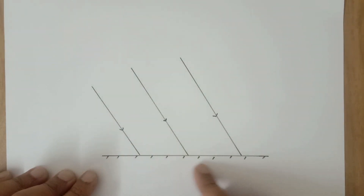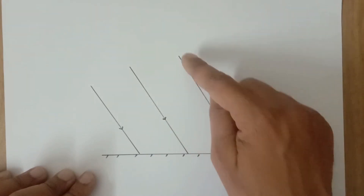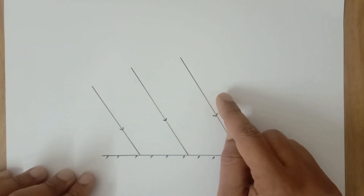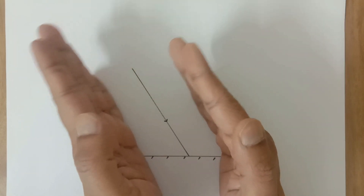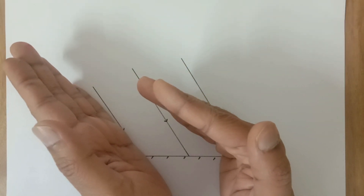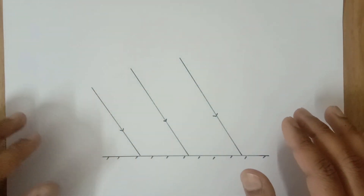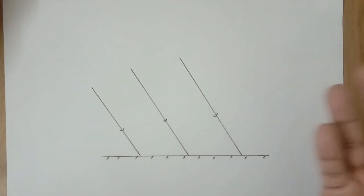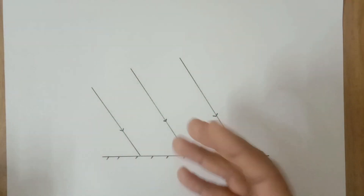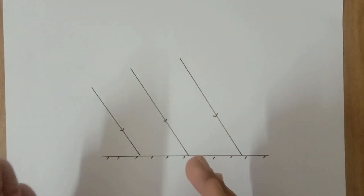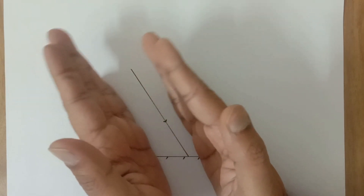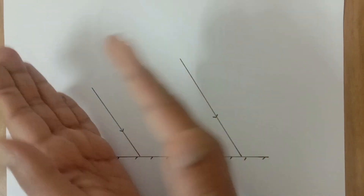I have taken a plane mirror — this is the non-reflecting or painted side of the mirror. There are three incident rays falling on the mirror and these three incident rays are parallel to one another. Please make sure not to draw these rays too tilted towards the mirror, otherwise you won't be able to make the diagram properly. It should also not be very much perpendicular to the mirror — keep it somewhere in between.